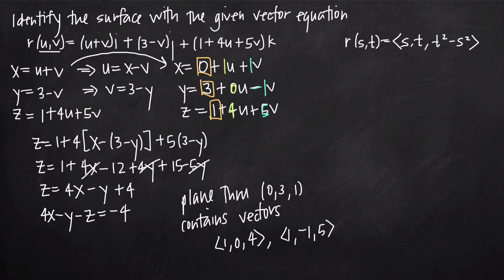Now let's look at another example where we don't just have linear values of our parameter variables. In this example, we have the vector equation r of s and t given by components s, t, and t squared minus s squared. This could also be written as s times i plus t times j plus quantity (t squared minus s squared) times k. Whether given in component or vector form, it's the same thing — these are just coefficients on i, j, and k respectively.